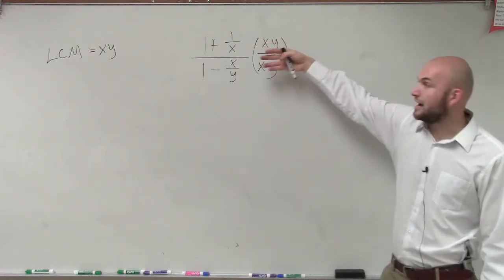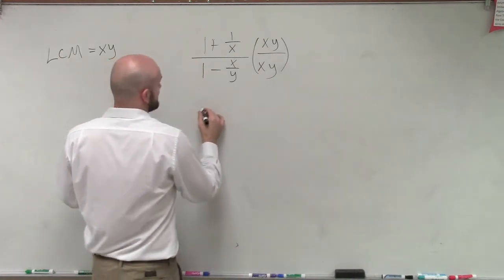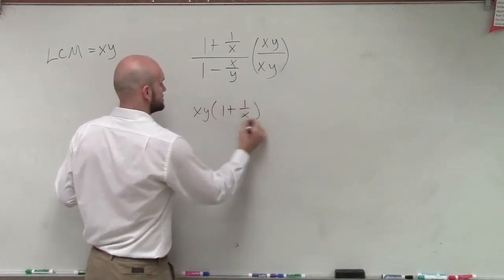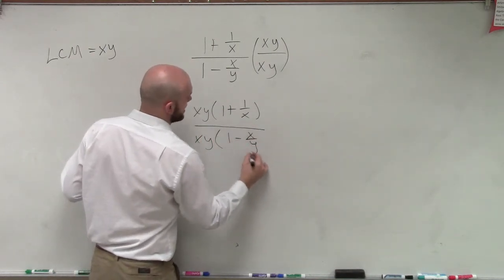So let's see, this is my LCM. I have a fraction on top and bottom. Let's see what this is going to look like. So what this looks like is xy times 1 plus 1 over x, over xy times 1 minus x over y.